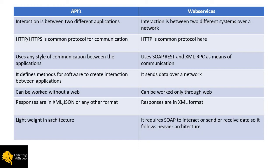An API is software that has calling methods or calling functions to interact with other software. In web services, we can only send data over the network between two machines. When using APIs, we call the methods of other applications, and those methods transmit the data — similar to a client-server model — creating the connection and transmitting data over the network.